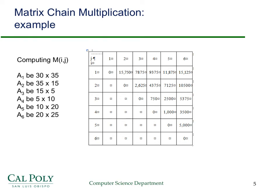An even easier one to see is from 4 to 5: that's 5 times 10 times 20, which is going to be 1,000. So you can see these represent all the products of two consecutive matrices — the number of multiplications required for those products. These numbers represent the matrices from 1 to 3, and this represents the minimum of either doing A1 times A2 first and then multiplying by A3, or A2 times A3 first and then multiplying by A1. We'll see that in more detail in the next slide.